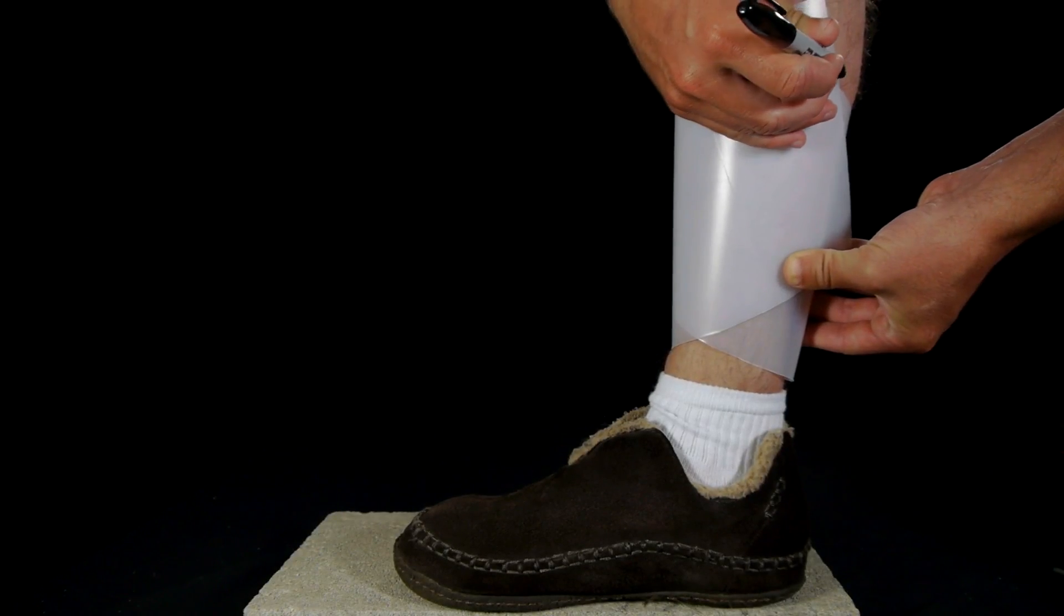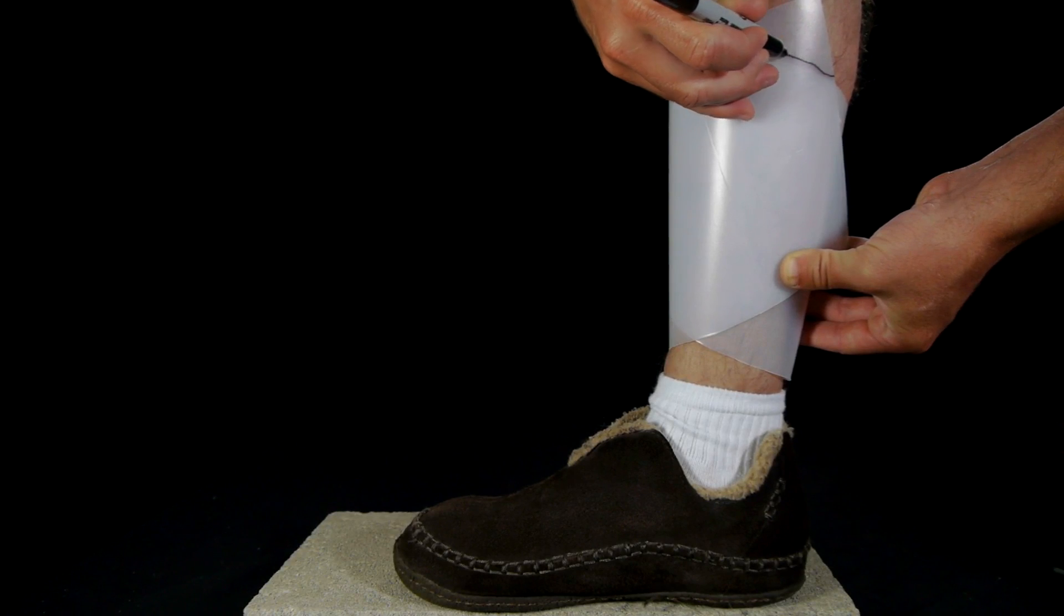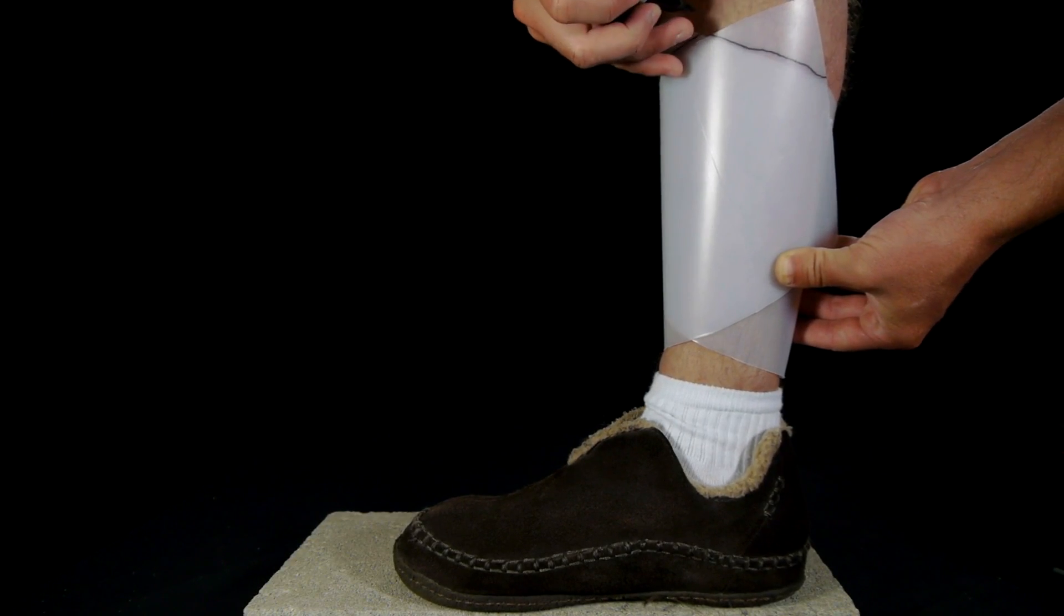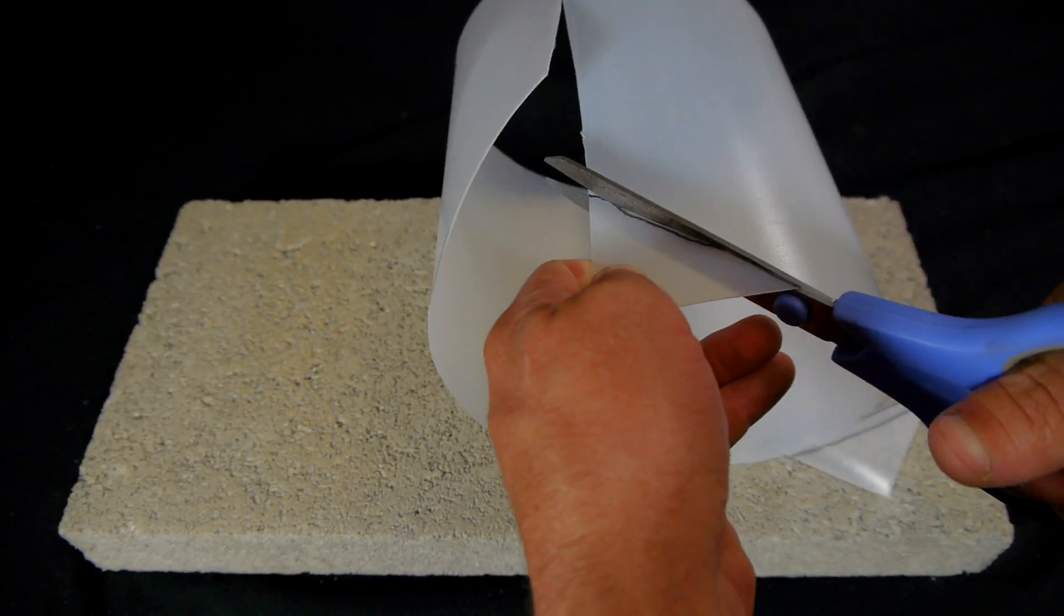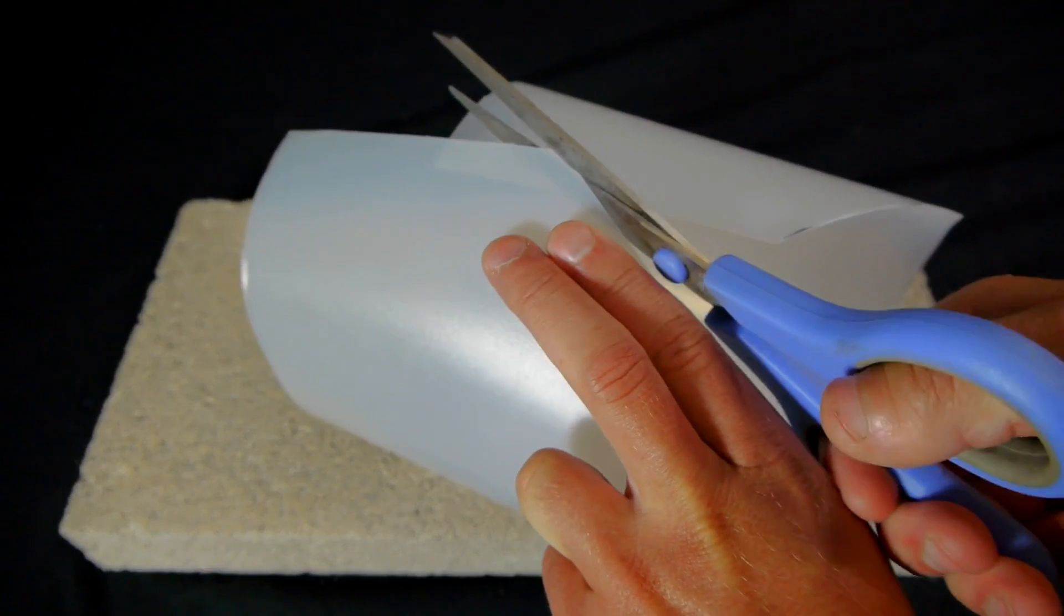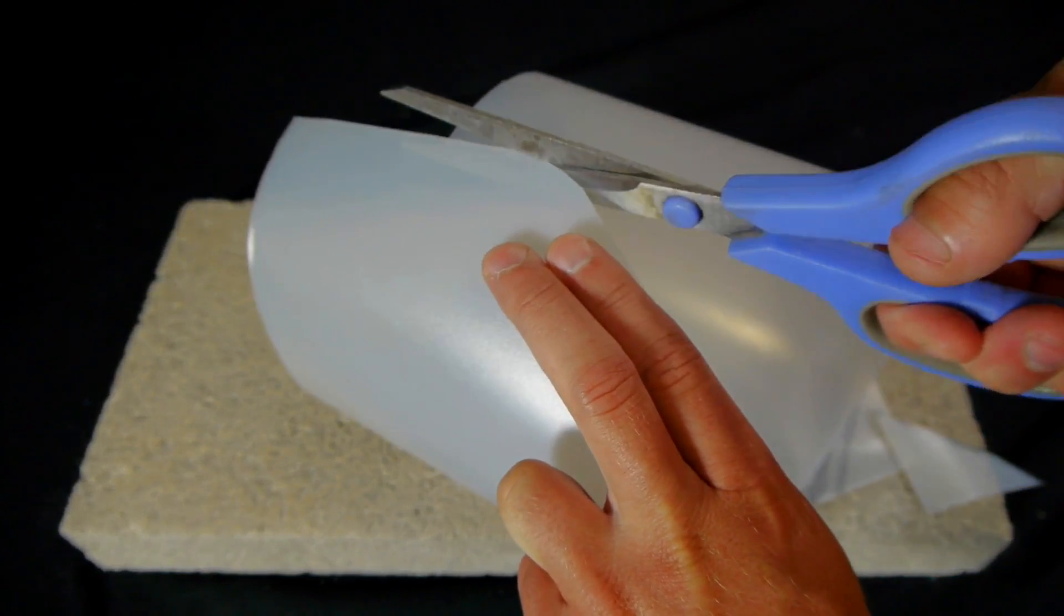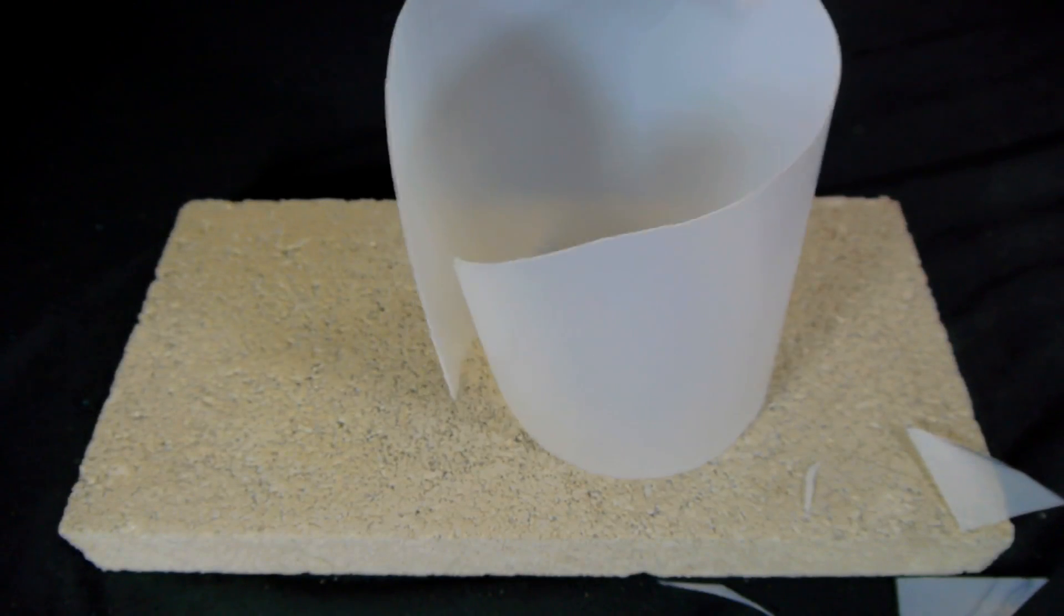The plastic sheet is now fitted around the wearer's leg and the corners that overhang are marked to be cut off. Once the sheet has been cut along the lines all the remaining corners are rounded off so there are no more sharp points to jab into the wearer's leg.